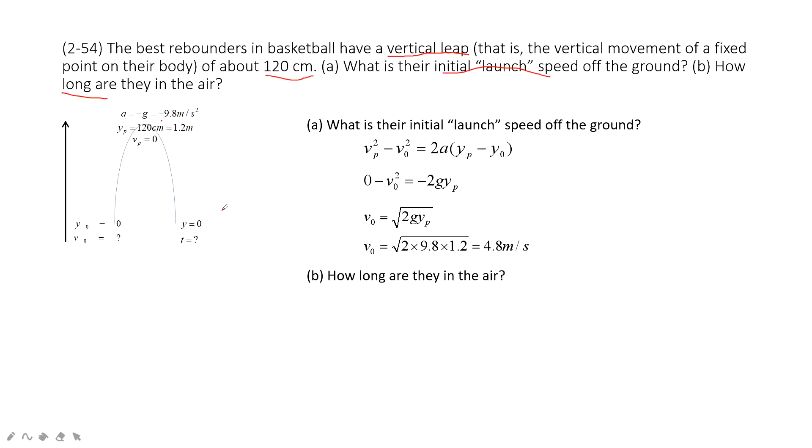And we also know initial velocity. So, which one? The displacement function with the time taken t, this one. Remember? And then input the known quantities. We can solve the time taken t as 2V0 divided by g. And then input the numbers. It is around 1 second.